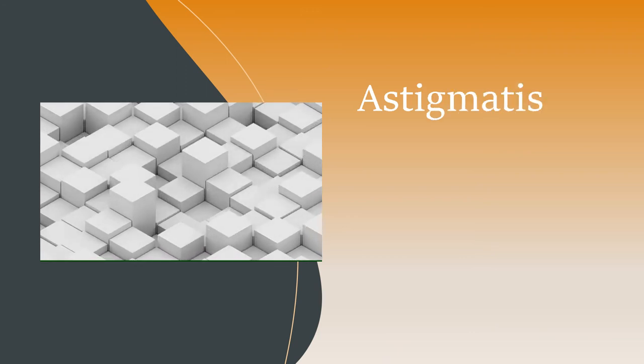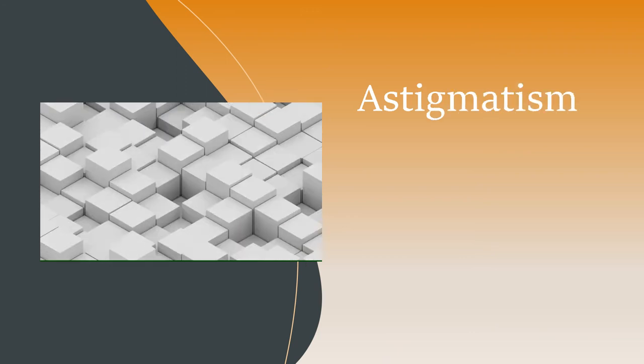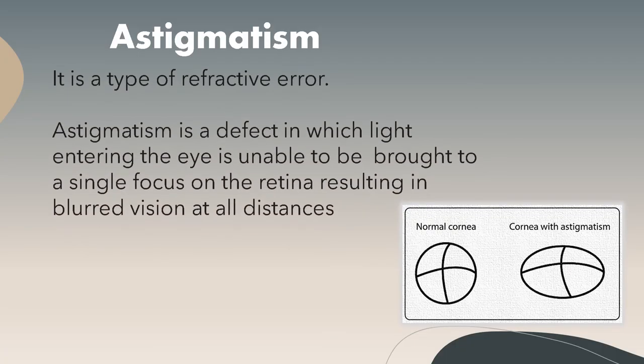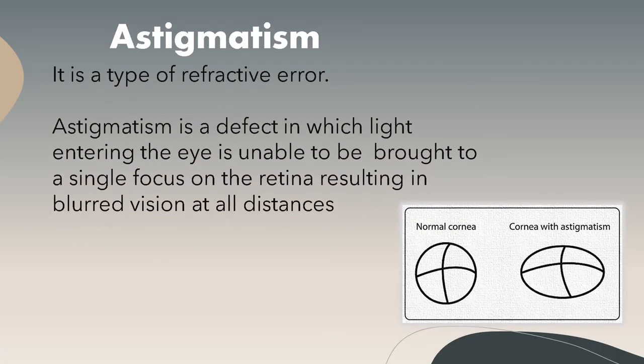Astigmatism is a type of refractive error in which light entering the eye is unable to be brought to a single focus on the retina, resulting in blurred vision at all distances.